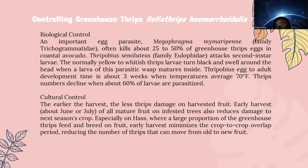The next method is cultural control. The earlier the harvest, the less thrips damage on harvested fruits. Early harvest, around June or July, of all mature fruit on infested trees also reduces damage to next season's crop, especially on Hass, where a large proportion of greenhouse thrips feed on fruit. Early harvest minimizes the crop overlap period, reducing the number of thrips that can move from old to new fruit.